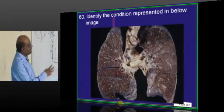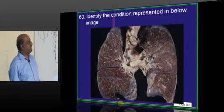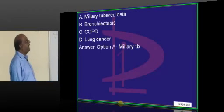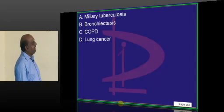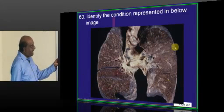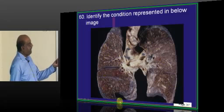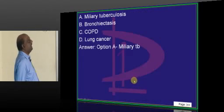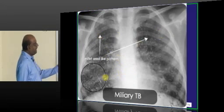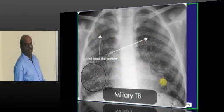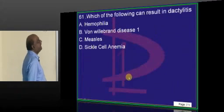What is this typical condition being shown in the image? It is miliary TB. You have multiple miliary seed-like appearances on the lung. Radiologically, the millet seed-like pattern makes it a disseminated miliary TB.